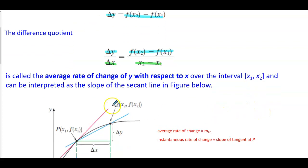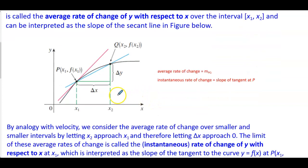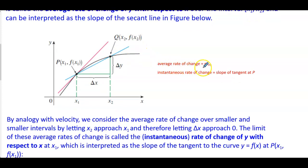And it can be interpreted as the slope of the secant line in the figure below. The change in y and the change in x are represented between the two values x1 and x2. The point P represents x1, f of x1, and the point Q represents x2, f of x2. So the average rate of change is the slope of PQ.